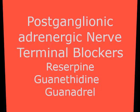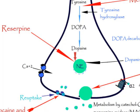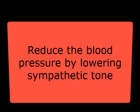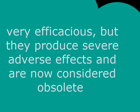Postganglionic adrenergic nerve terminal blockers include reserpine, guanethidine, and guanadrel. Reserpine depletes norepinephrine storage from the postganglionic adrenergic nerve terminal. Guanethidine and guanadrel block the release of norepinephrine from the postganglionic adrenergic nerve terminal. These drugs lower blood pressure by lowering sympathetic tone, but in high dosages they produce severe adverse effects and are now considered obsolete for hypertension.